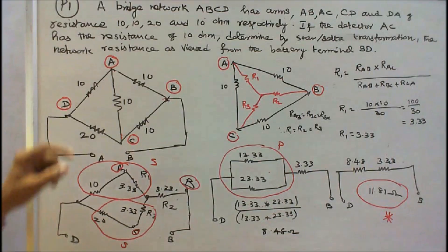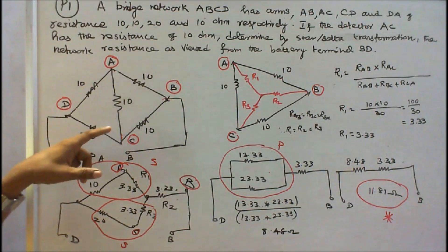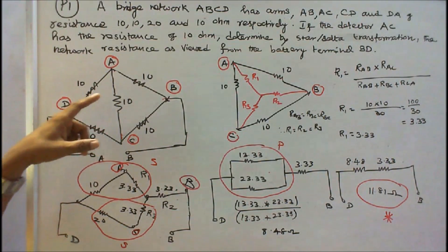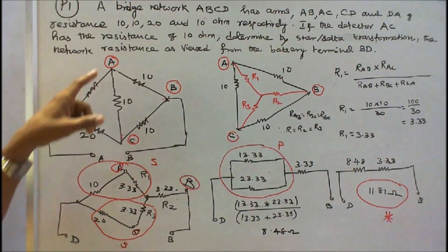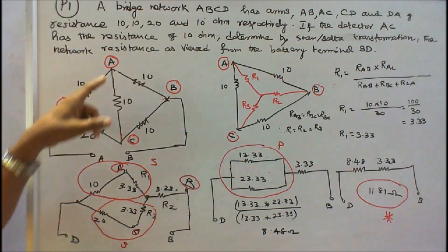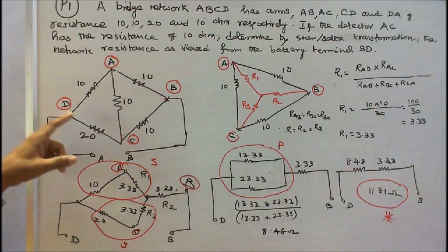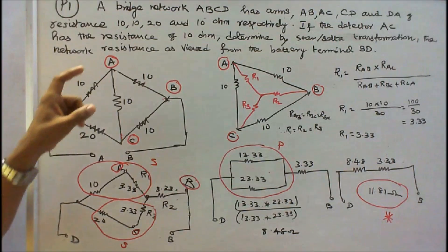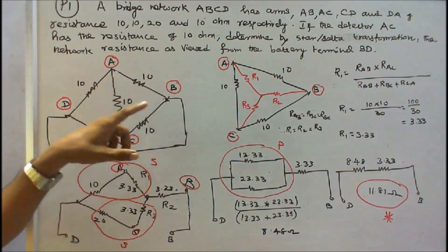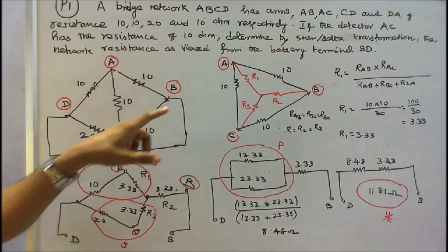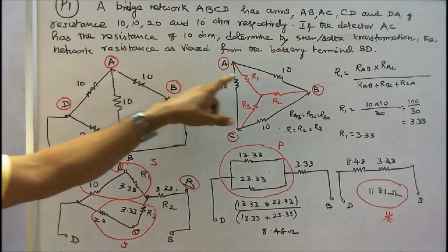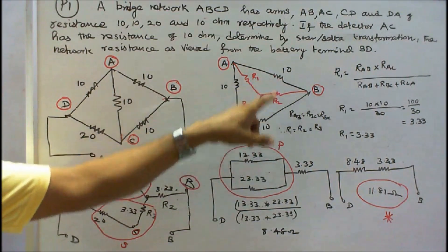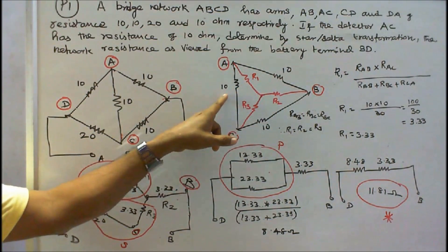The five resistors are connected as shown in the figure. In this figure there are two deltas: ABC is one delta and ACD is another delta. Now I convert the delta ABC into star. This is ABC — this is 10 ohms, this is 10 ohms, this is 10 ohms.